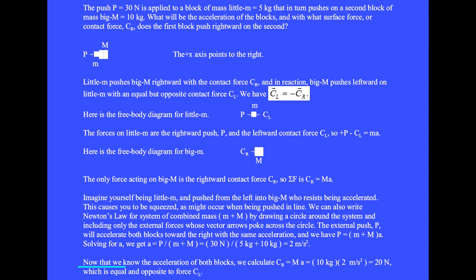Now that we know the acceleration of both blocks, we calculate CR equals big M times A equals 10 kilograms times 2 meters per second squared equals 20 newtons, which is equal and opposite to the leftward contact force CL.